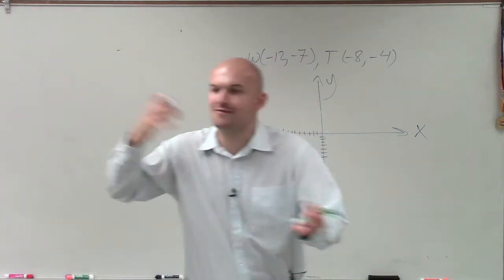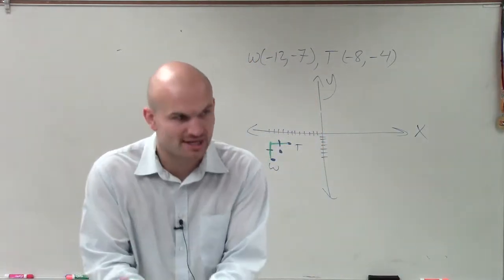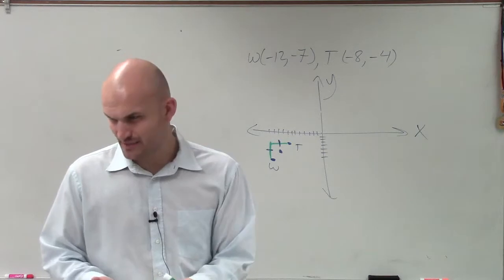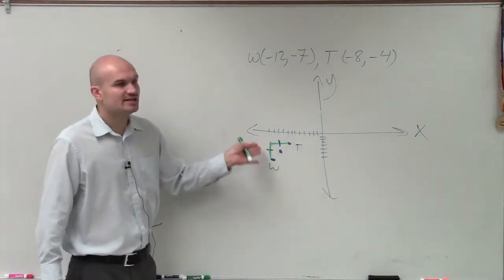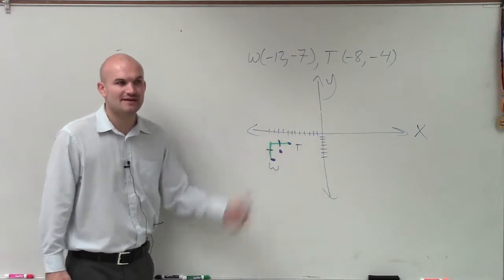And half the distance vertically, half the distance horizontally is going to create our midpoint. Does that kind of make a little sense? So how do we determine half the distance horizontally and half the distance vertically?